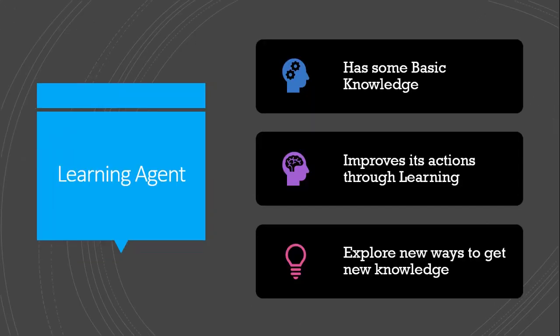In artificial intelligence, we have one special branch known as machine learning in which we discuss such type of agents which perform actions by learning through various algorithms. We will also touch some machine learning concepts in this course. Today we are only discussing what are the learning agents and how they are different from other agents that we have learned so far.